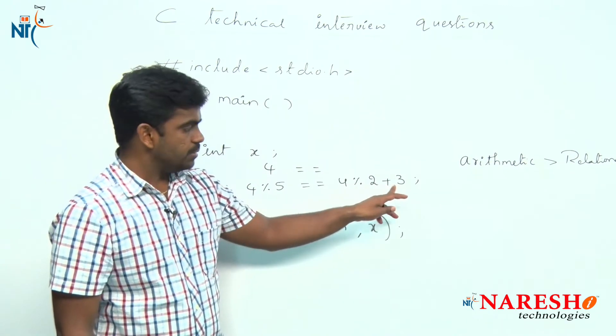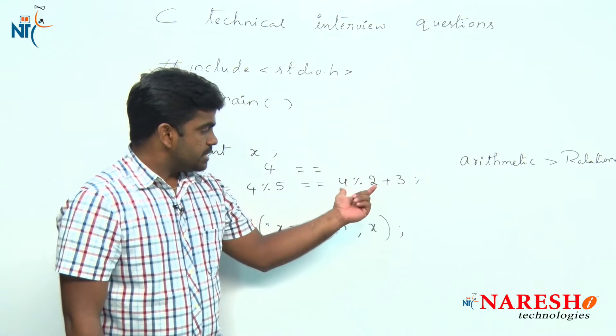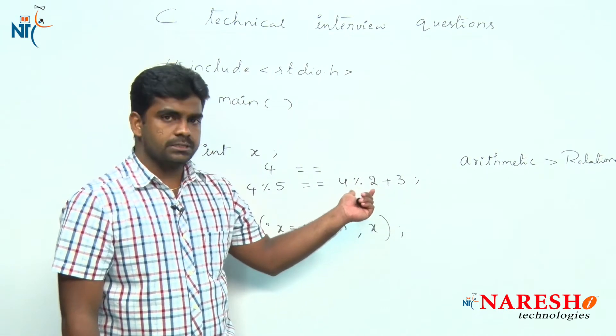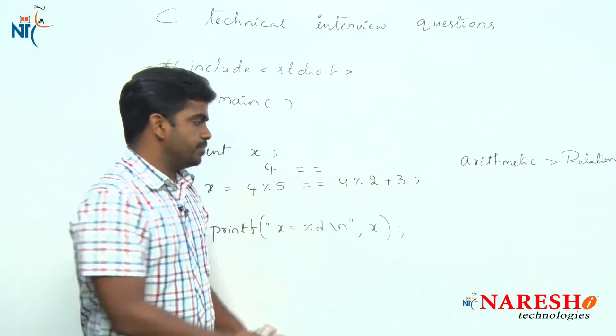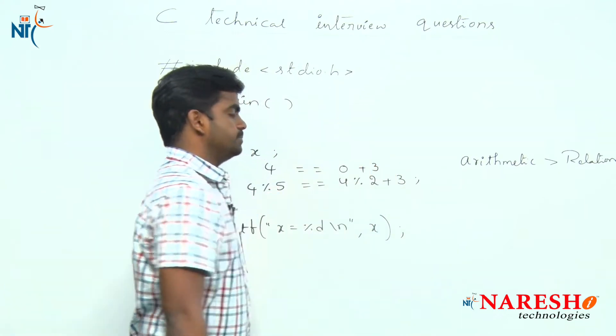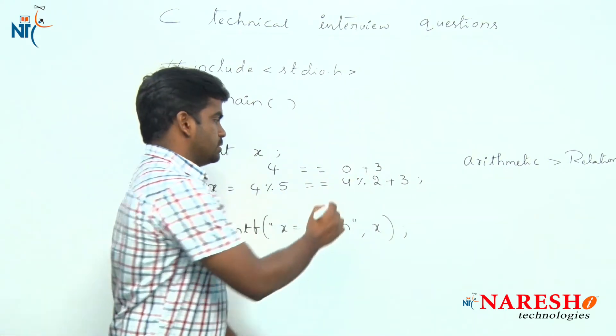First it will execute 4 mod 2. 4 mod 2, yes it is divisible and the remainder is 0. Remainder is 0 plus the value is 3. 0 plus 3, the value is 3.